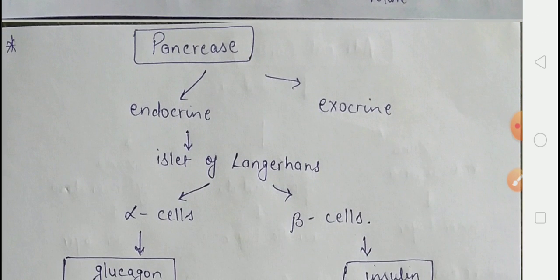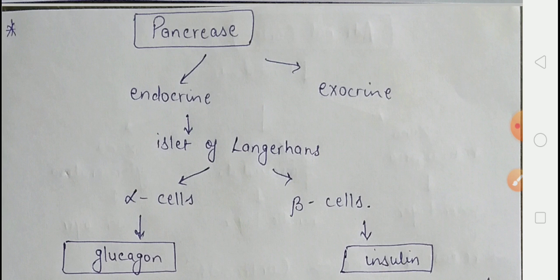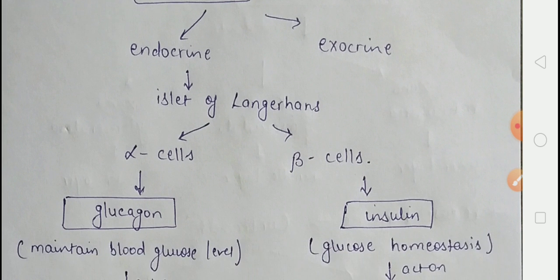The next gland is the pancreas, which is a composite gland — it is both exocrine and endocrine. The endocrine function is carried out by the islets of Langerhans. In our body, there are approximately 2 million islets of Langerhans present, which normally constitute 1–2% of pancreatic tissue. The islets of Langerhans have two main types of cells.